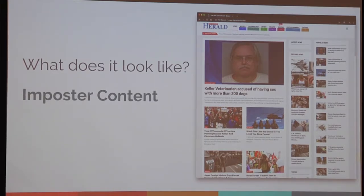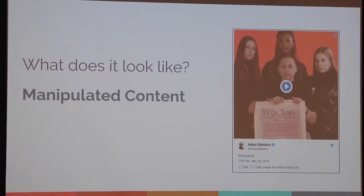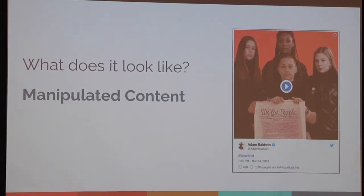Here's a piece of manipulated content you might recognize. This image was originally from a Teen Vogue cover spread in which Emma Gonzalez and other anti-gun activists were shown tearing apart a shooting target — the shape of a man with targets. On 4chan, people said, let's turn that into something more exciting, and they essentially Photoshopped in the Declaration of Independence, creating a video where she appears to be tearing it apart. So it was real content that was then manipulated to change what it meant, possibly dramatically.